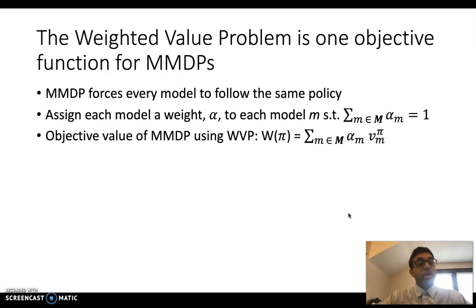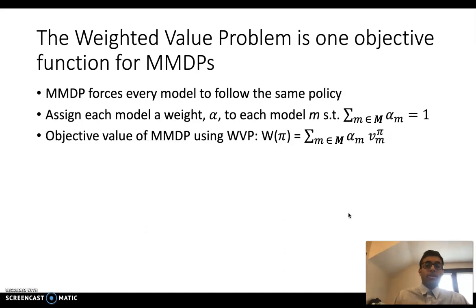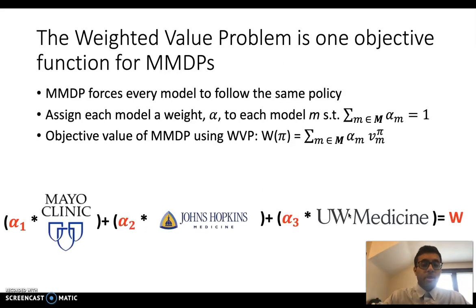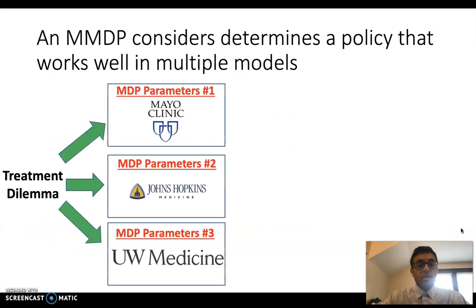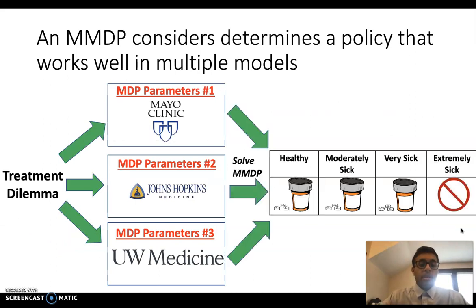The weighted value problem is the main objective function for these MMDPs. Because the MMDP forces every model to follow the exact same course of action, we assign a model weight called alpha to each model such that all weights sum to one. This objective value is a weighted average of the rewards you get in each model, given that you are forced to take the same course of treatment. This gives us our final value W, corresponding to the ultimate rewards from implementing this policy. So in the MMDP case, we arrive at one policy — not three different policies — that works well across all three cases.